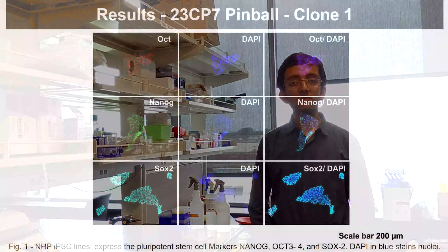We picked up these colonies and expanded them for further characterization. These consisted of pluripotent markers OCT4, SOX2, and NANOG. This confirmed our successful generation of iPSC lines. The next step is to produce myogenic progenitors from these iPSC lines for future transplants and studies.